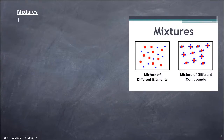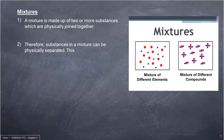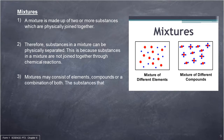A mixture is made up of two or more substances which are physically joined together. Therefore, substances in a mixture can be physically separated, because they are not joined together through chemical reactions. Mixtures may consist of elements, compounds or a combination of both. The substances that make up a mixture may be solids, liquids or gases.